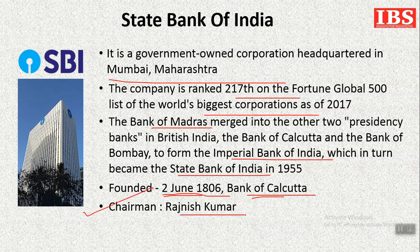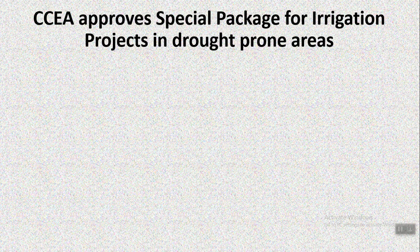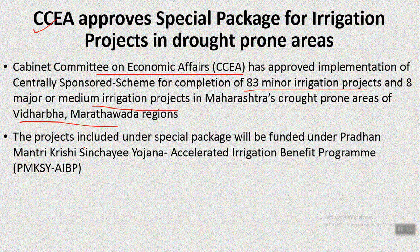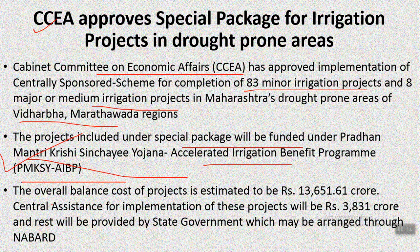The current chairman of SBI is Rajneesh Kumar. Moving on, the CCA has approved a special package for irrigation projects in drought-prone areas of Maharashtra. These projects are included under the special package funded by Pradhan Mantri Krishi Sinchai Yojana's Accelerated Irrigation Benefit Program. The overall cost will be Rs. 30,651.61 crores, of which the central government will give Rs. 3,831 crores and the rest will be borne by the state governments and NABARD.